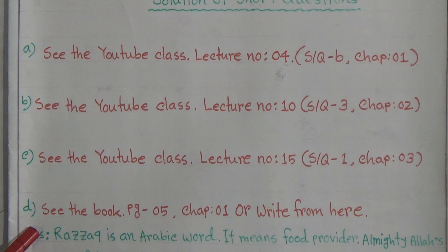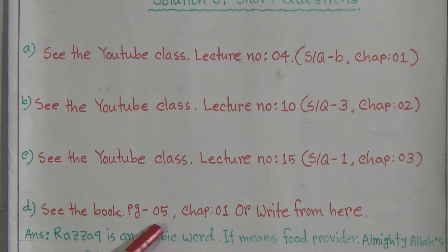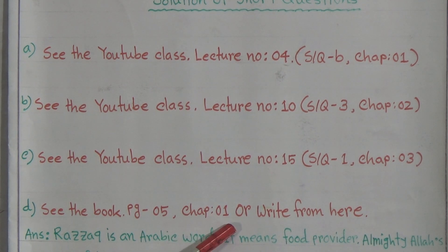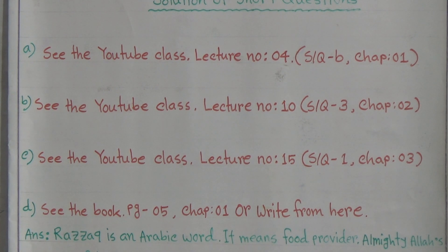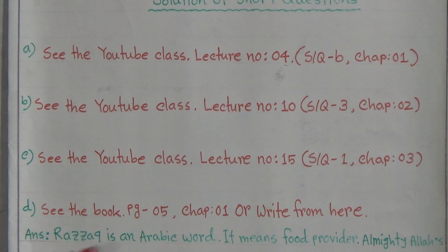D number question: what does the word Razzak mean? You will get this answer in your book, page number 5, chapter 1, or right from here. You will not get this answer in your YouTube class, but I have written it here. Razzak is an Arabic word; it means food provider. Almighty Allah's one of the attributive names is Razzak, because He provides food for all living beings. So dear students, for D number answer, you can write from here or see the book page number 5, but you will not get it in the YouTube class, as we did not take a YouTube class about this question.